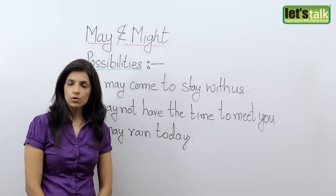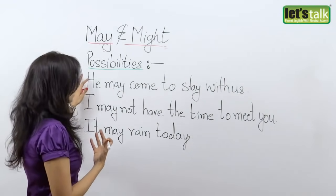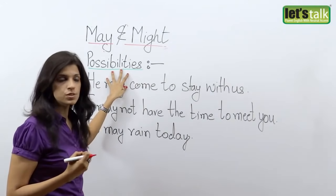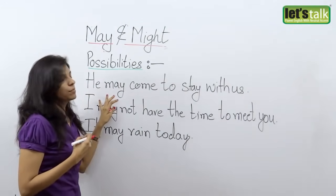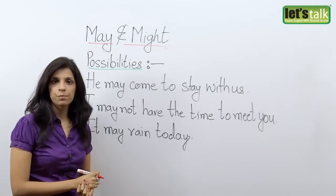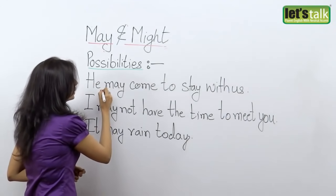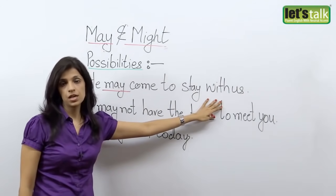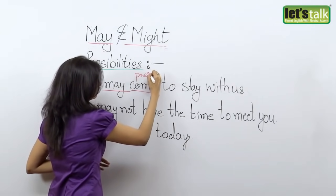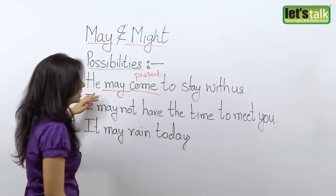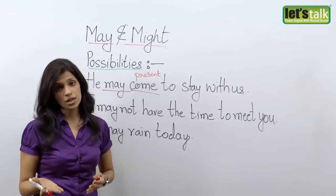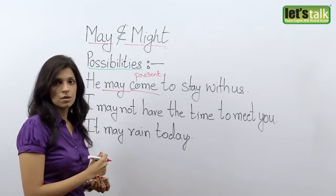Now let's take a look at how may is used when you want to speak about something that is possible. For possibilities, you use may — something you are not sure of, where there are chances of it happening but you are not sure. For example, 'He may come to stay with us.' Please remember: after may, the verb is always in the present form. I cannot say 'he may came.' So he may come to stay with us — it's probable that he may come and stay with us.